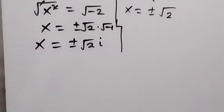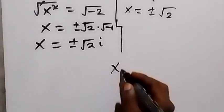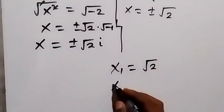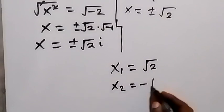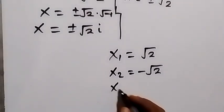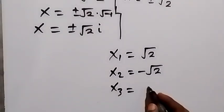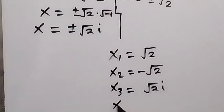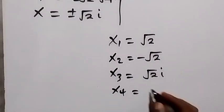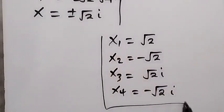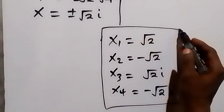So we can conclude from here that the solutions to this problem are: the first one, x1 equals to square root of 2, then x2 equals to negative square root of 2, then the third solution x3 equals to positive square root of 2i, then the fourth solution being negative square root of 2i.